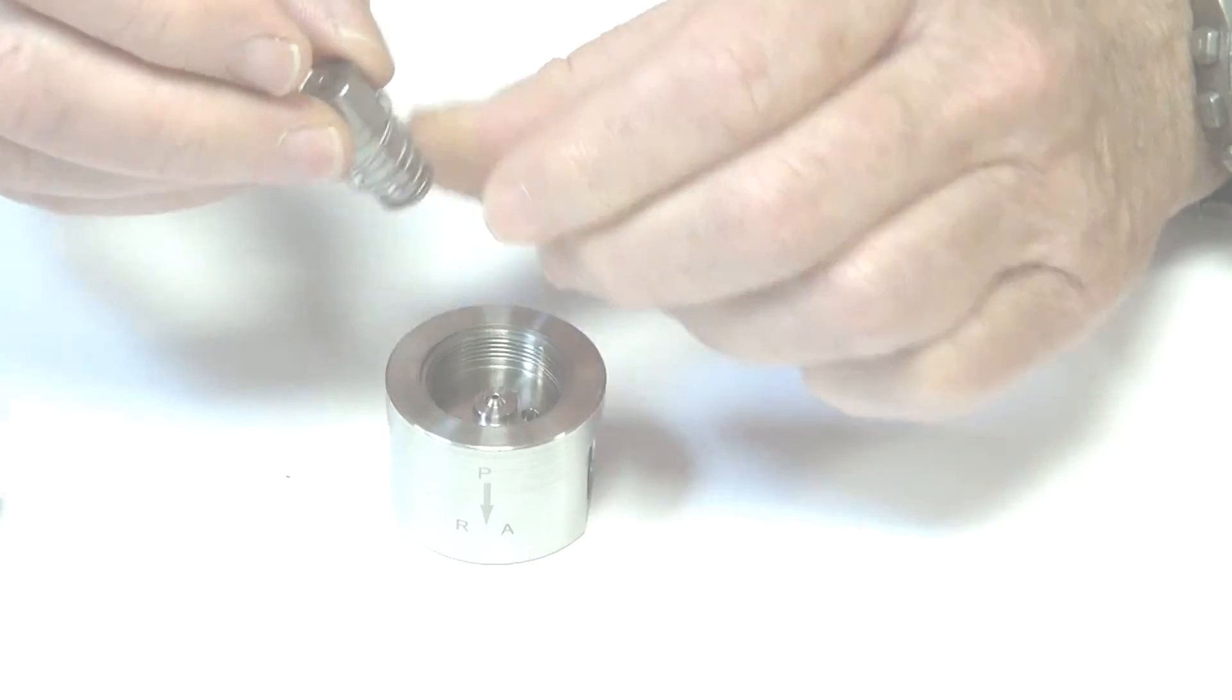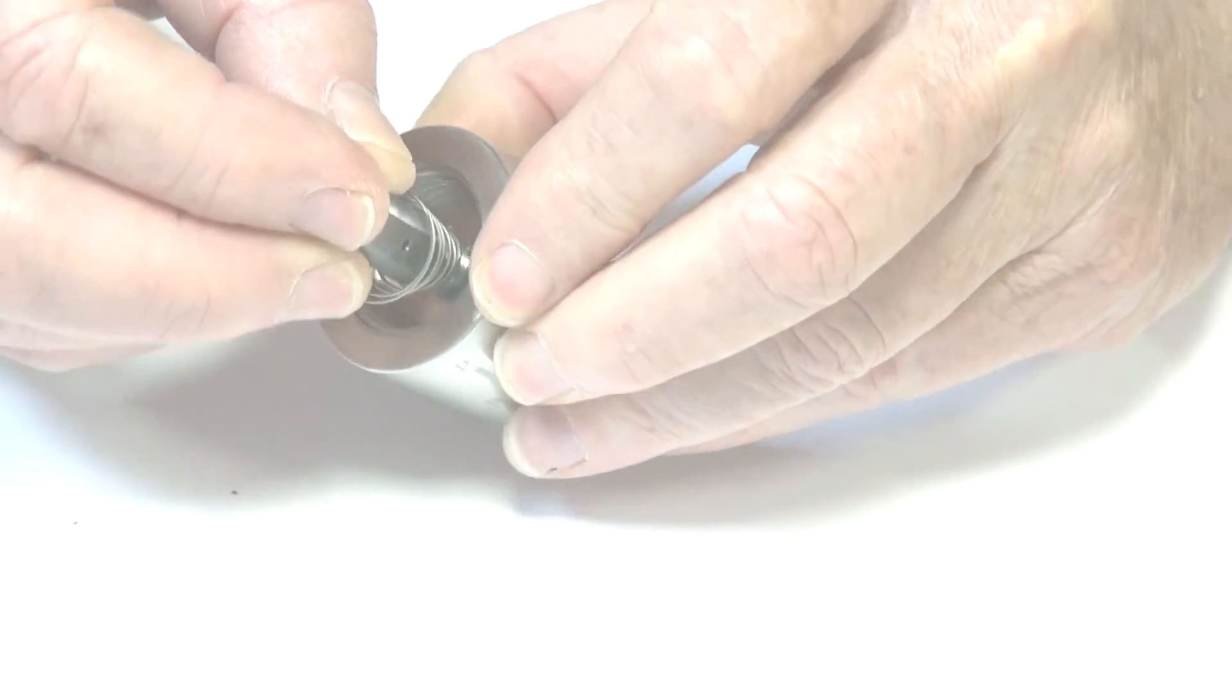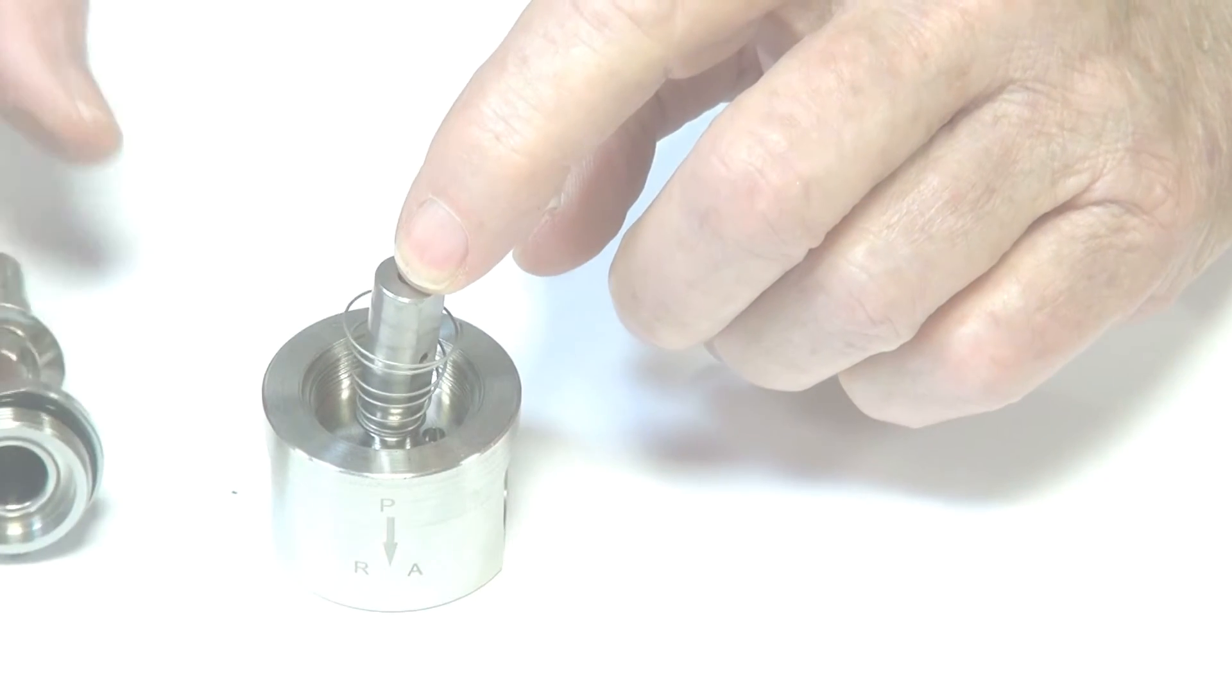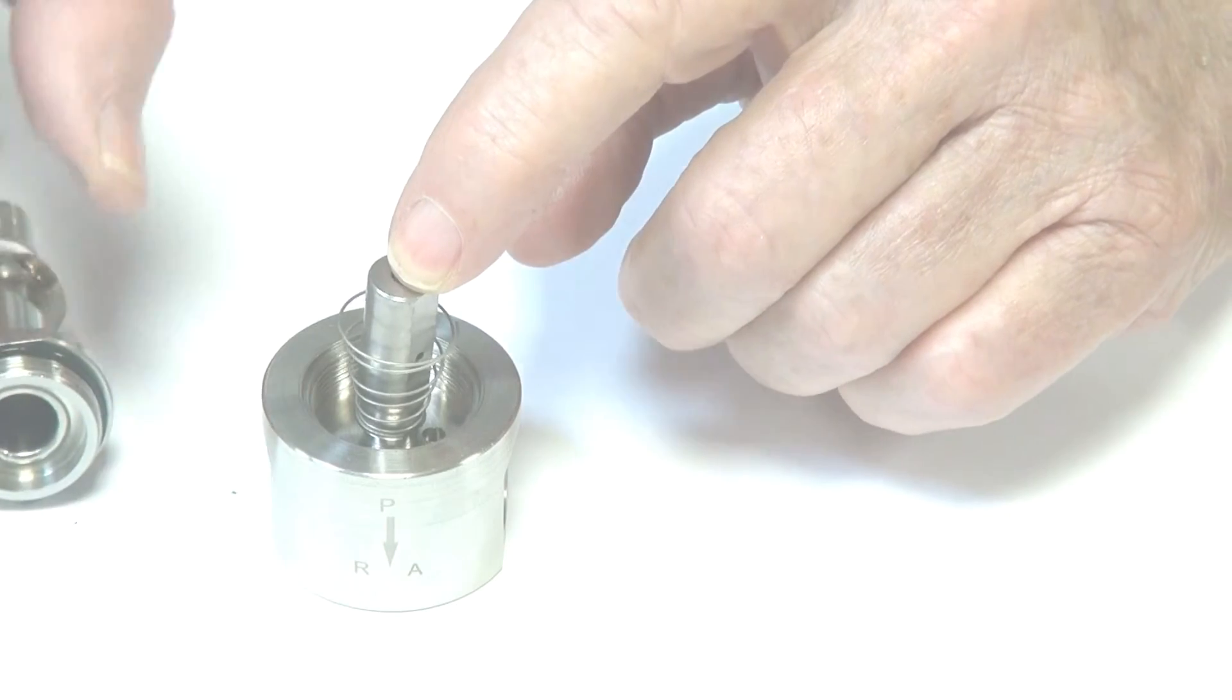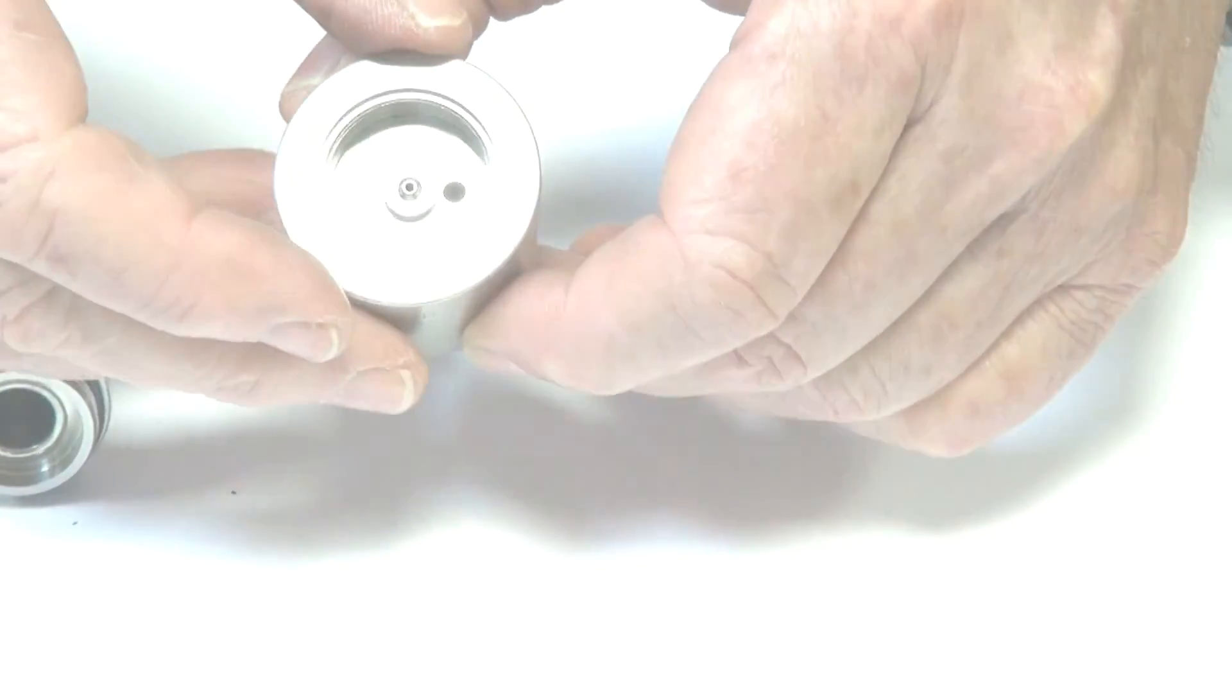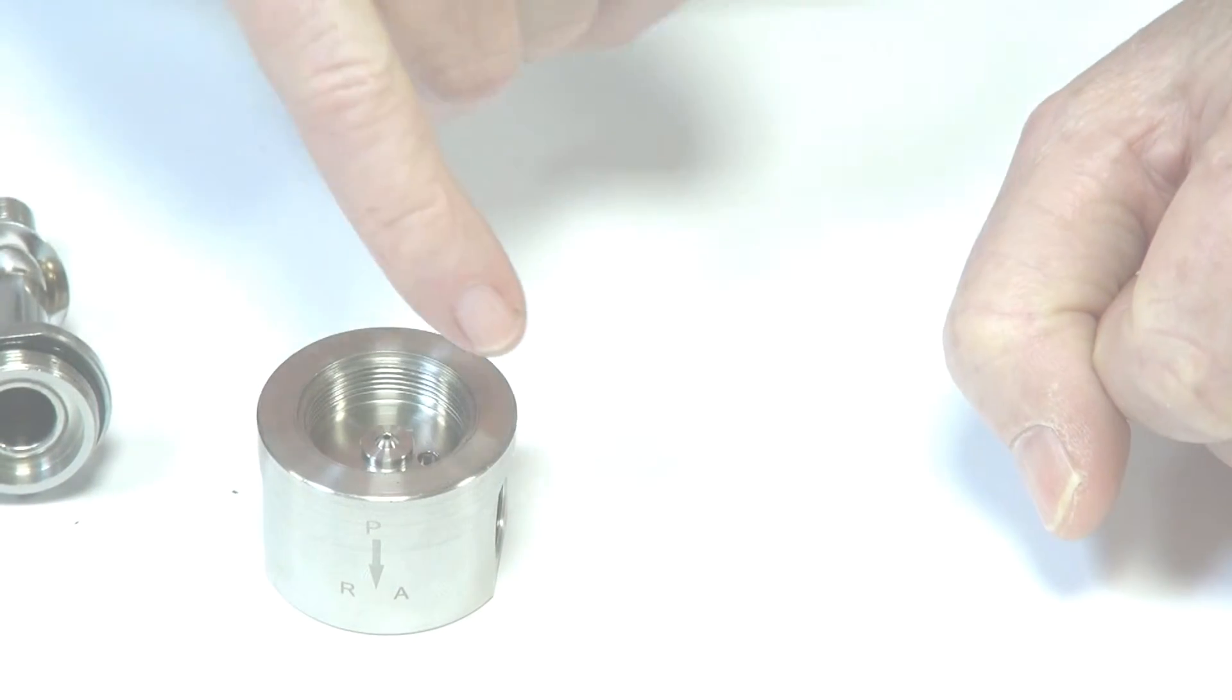The air or media will go down through the stem and out through this hole on the side, and that'll give the normally open function, so the liquid is going through and out.